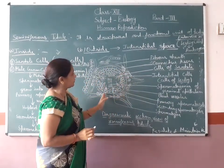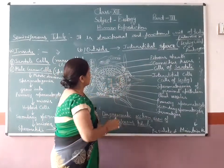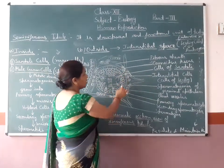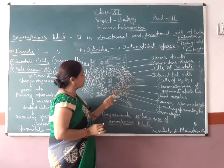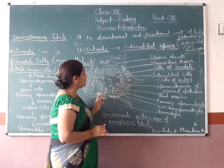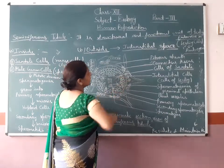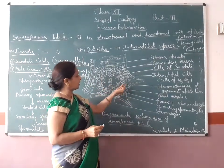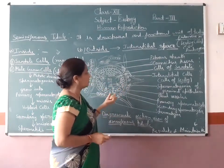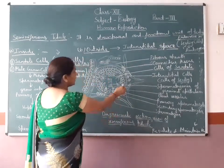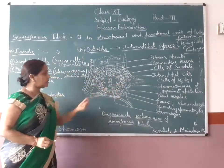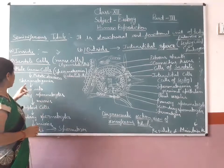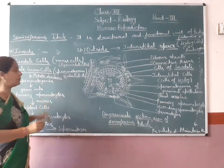In this figure, you are watching the inside of the seminiferous tubules. The first layer is called the primary germ epithelium cells, also known as spermatogonia. The second cells are Sertoli cells. This spermatogonia of germinal epithelium undergoes mitosis division and forms many spermatogonia.